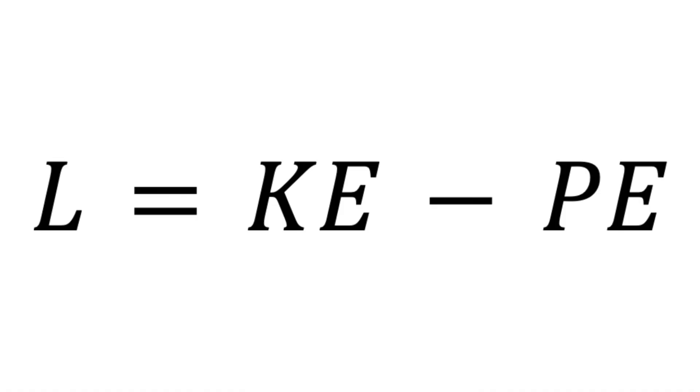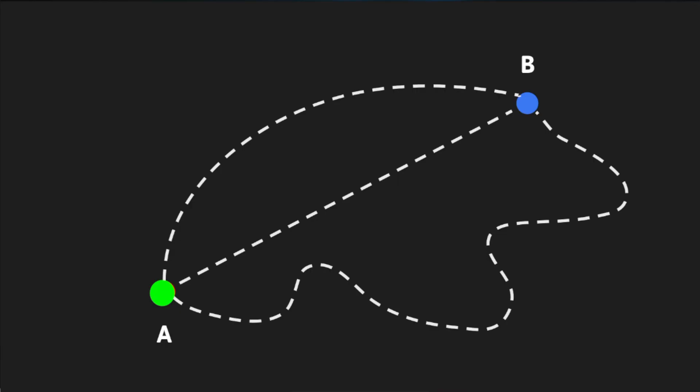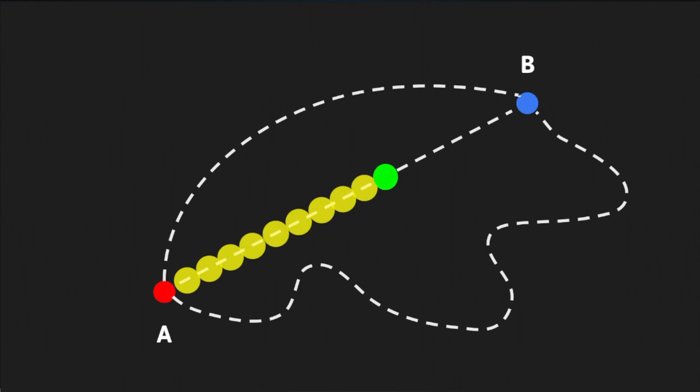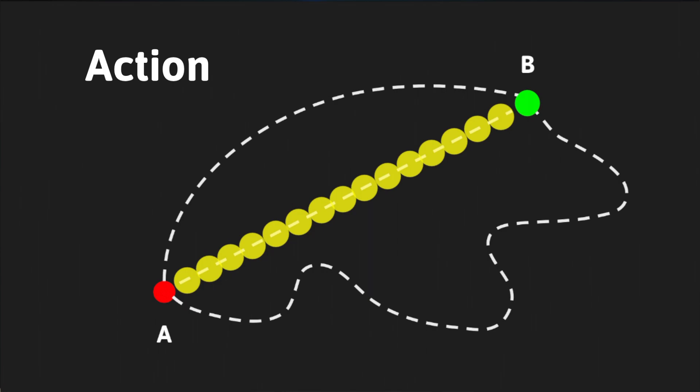But perhaps there were some kind of pattern we could take from this. Maybe there was some kind of quantity, like time or distance, that we could minimize to find a pattern of motion for all systems. Lagrange had the idea of taking the kinetic energy and potential energy, and subtracting them to get a quantity known as the Lagrangian. He then considered every possible path an object could take to get from point A to point B. If you choose a certain path and add up the Lagrangian at every single point in that path, you get a value known as the action.